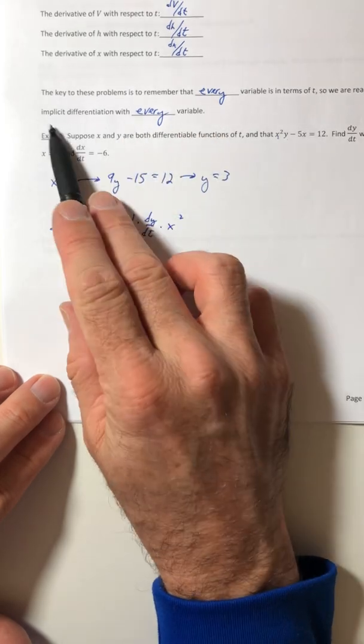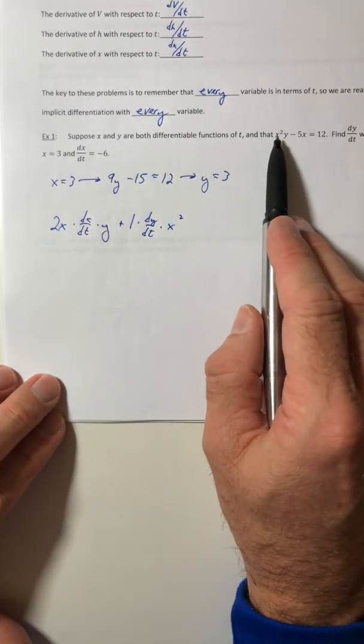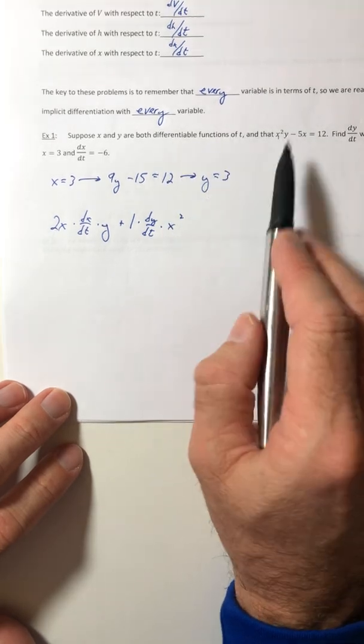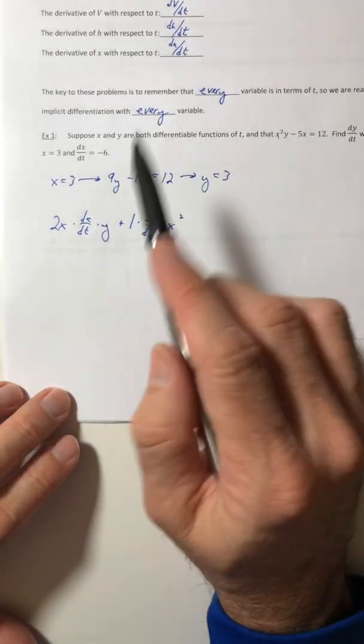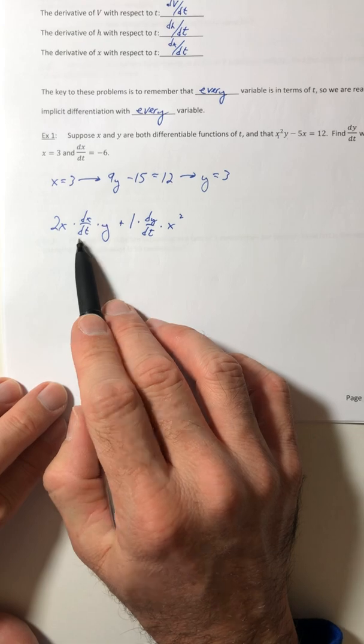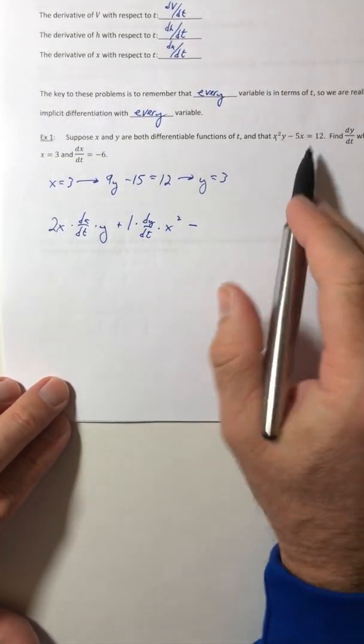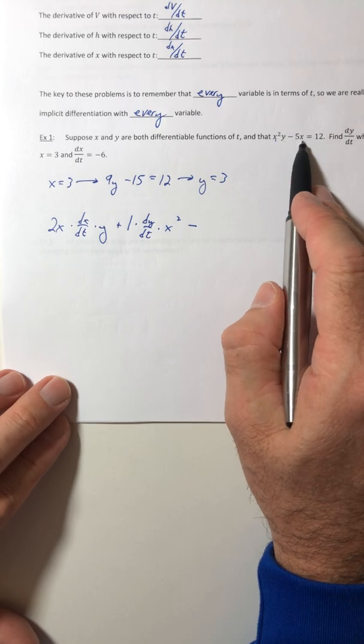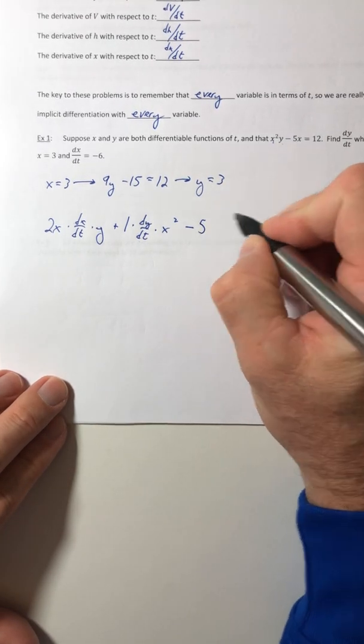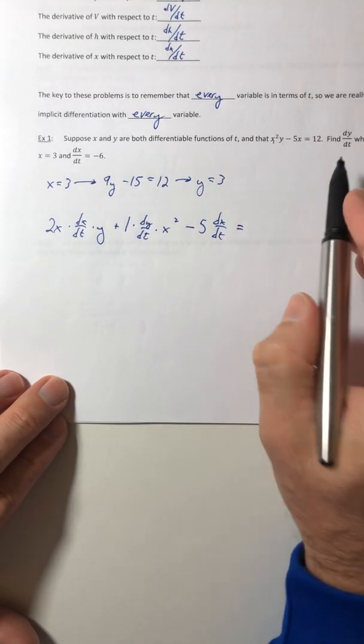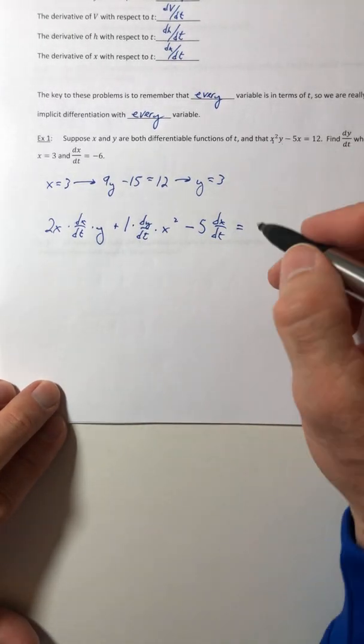So every variable is in terms of t, so you've got to use implicit differentiation with every variable. Every time you take the derivative of an x, a y, a j, a v, whatever it is, multiplied by that d-something over dt. Okay, so now the derivative of -5x would be -5 dx/dt, and then the derivative of 12 would just be 0.